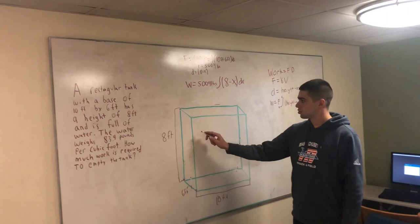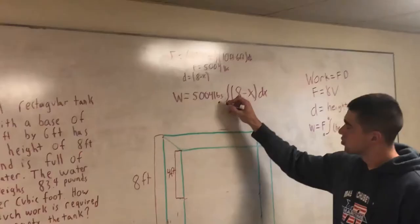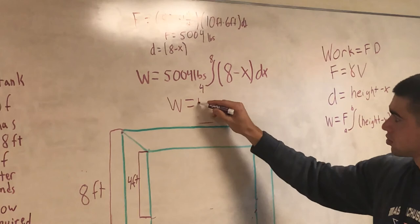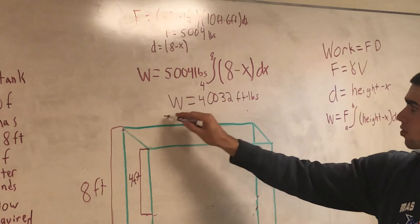So next we're going to solve for work when you only want to take the top 4 feet out of your tank. Your tank is still full, and all your other components are still the same. So the only thing that's going to change is your A to B in your integral. Your B is going to equal 4, and your A is going to equal 8. And after you change that out and plug that into math 9, it's going to equal 40,032 feet per pounds. That's the amount of work that is going to need to be done.